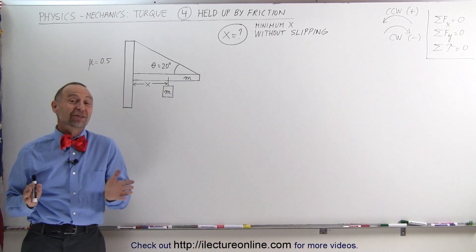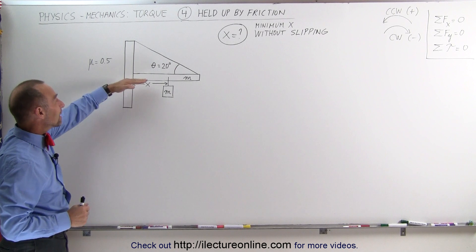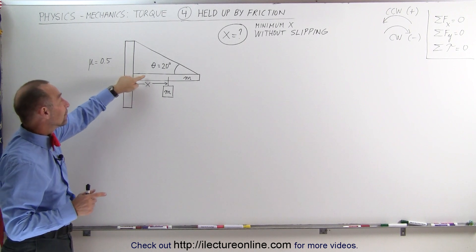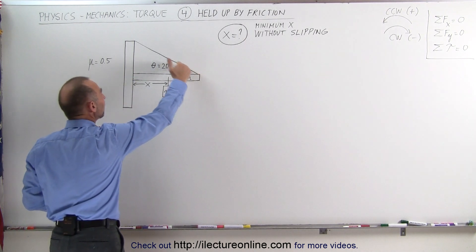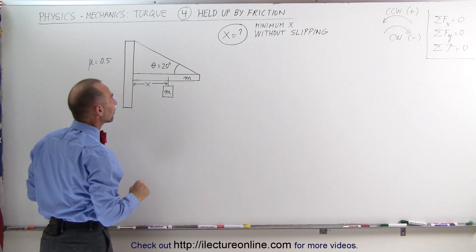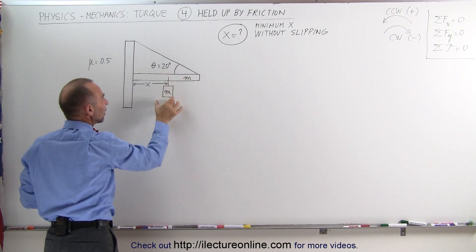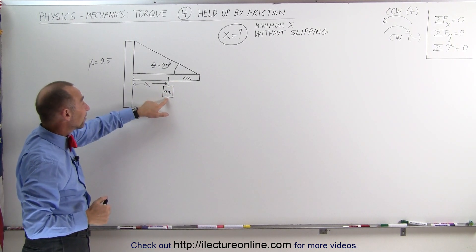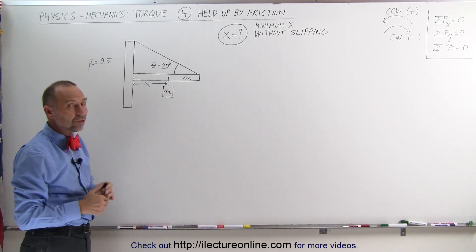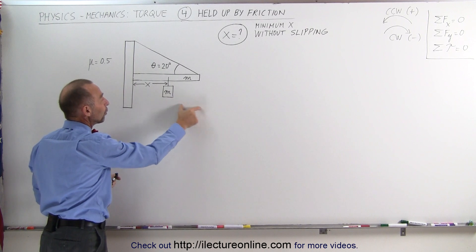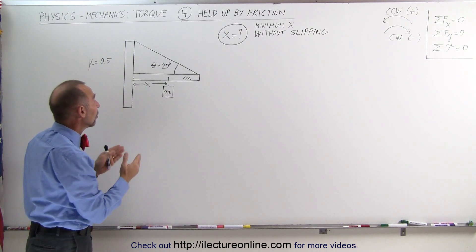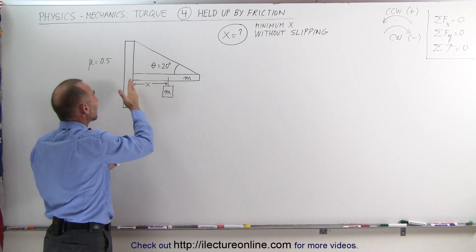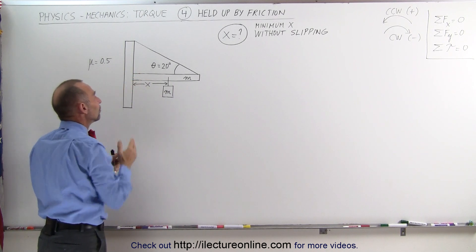Welcome to Electronline. Here we have another very interesting problem. We have a beam that is not attached to the vertical post — it only is being held up by the friction between the beam and the post. On the other end it is being held up by a cable making an angle of 20 degrees with the horizontal. The mass of the beam is M, and it's supporting another mass M suspended from it at a distance X away from the post. We want to find the minimum distance X such that the beam will not slip down.